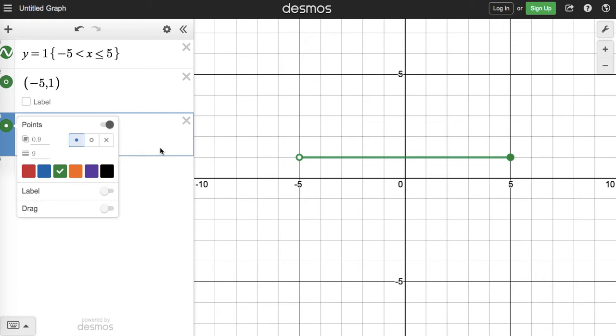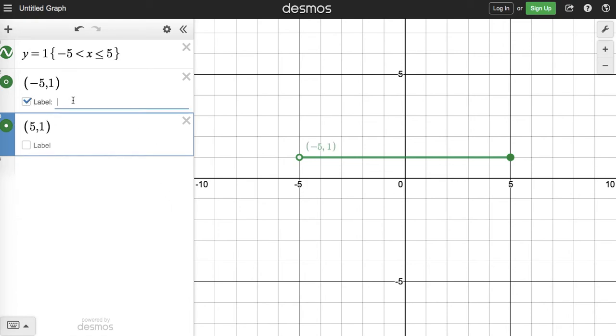If you want to label these, you can add labels. If we just want negative 5 to show up, we can put that here. It's going to automatically label with the point, but if you wanted to put a different value like 5.1, you could.